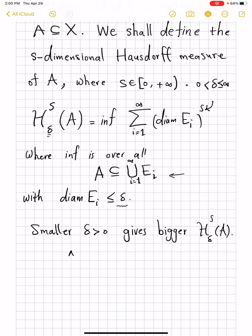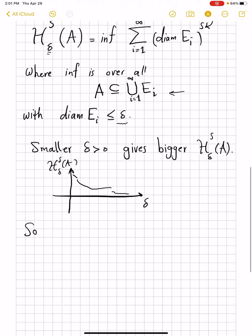because maybe the infimum was among those coverings that are now tossed out. So, therefore, H^S_δ, if you freeze your set A and S, then the quantity H^S_δ of A will be non-increasing. So, it may be flat at some point, it may drop, it may also be discontinuous, we don't know, but anyway, it's going up when you go towards zero. Therefore, the following quantity is well-defined. So, limit of H^S_δ of A, as delta goes down to zero, is well-defined, and it's easy to see why it's the same as taking supremum over all delta positive of such quantities.